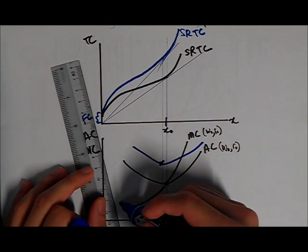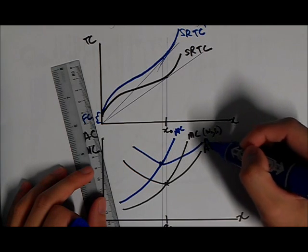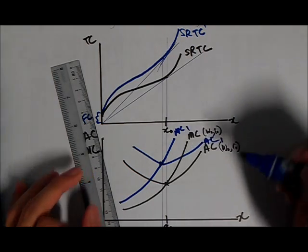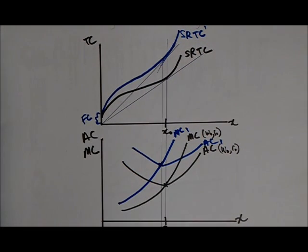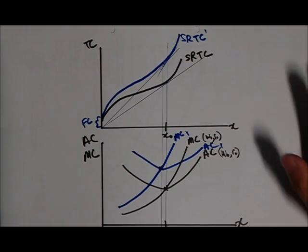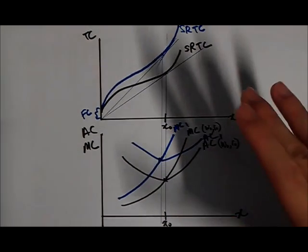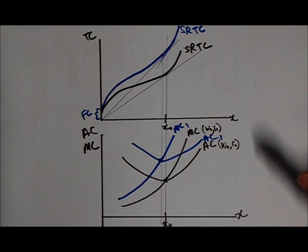Marginal cost, average cost. So in the exam, whenever you encounter maybe a per unit tax or a per unit subsidy, and if you want to score marks and show that you really understand what's going on, I suggest that you come up with this kind of graph just on the sidelines note. So that he understands that you understand, the examiner.